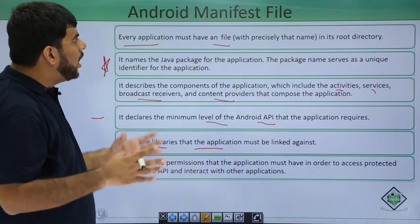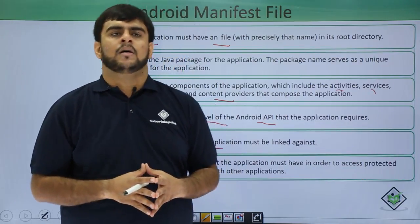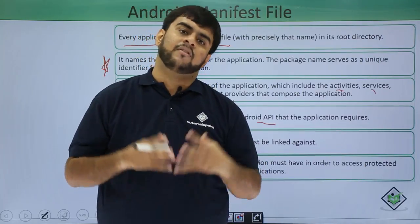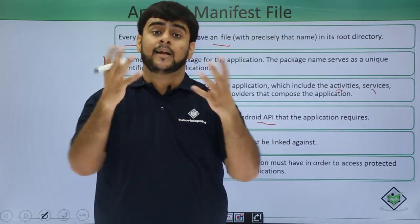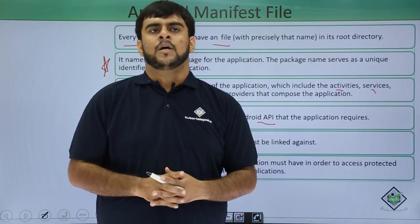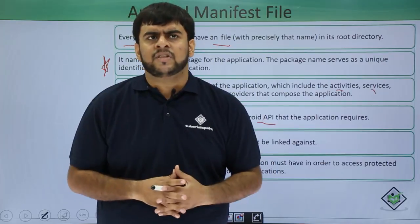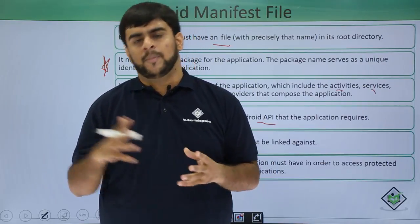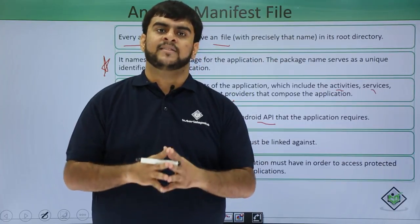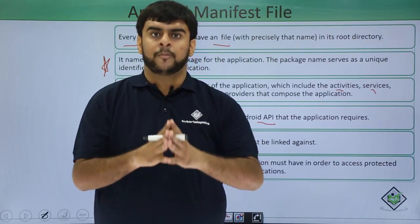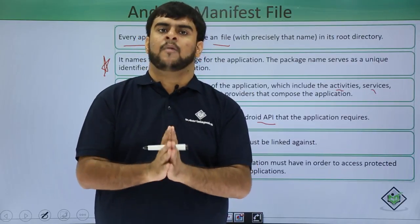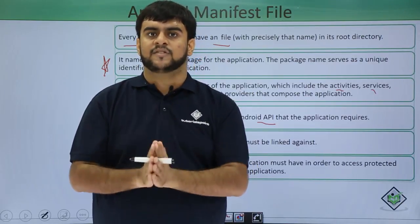So that was all about the manifest file. To summarize, the manifest file is a container or holder that contains the entire application summary — what the application will have and what permissions it will use. The permissions section will be covered in upcoming videos. In the next session, we will be studying about activities — the first component of the application — and the activity lifecycle in detail. Thanks.